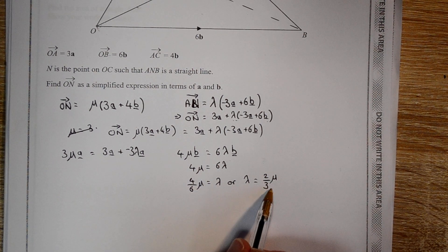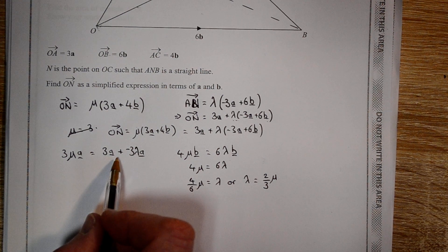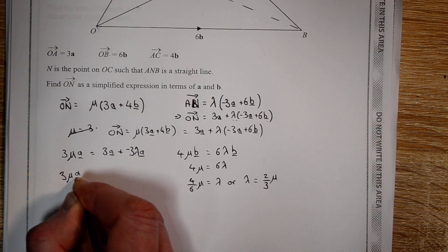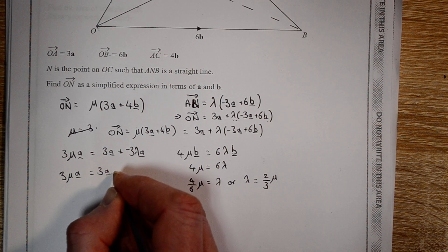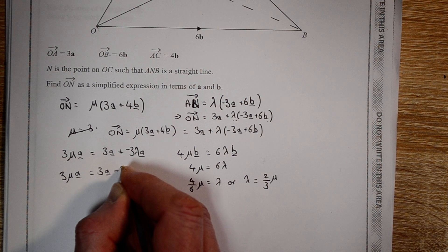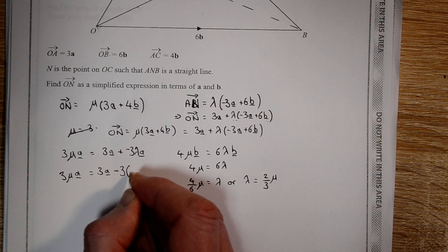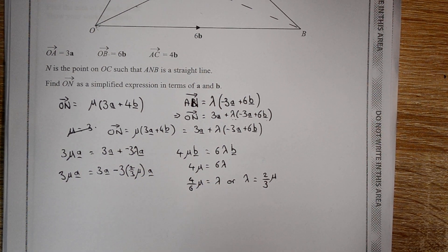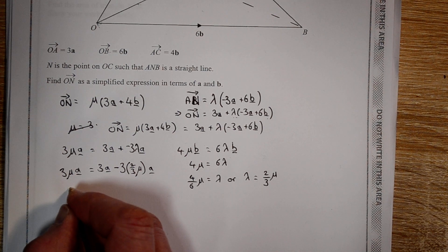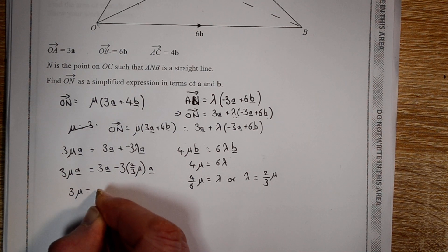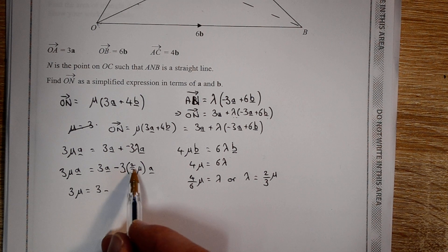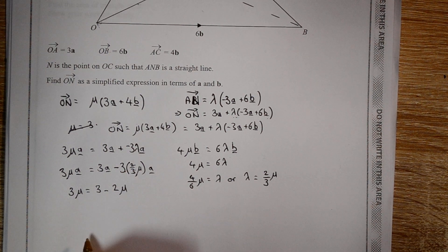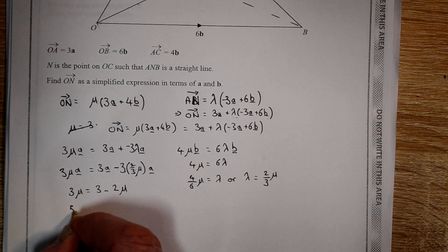Now I've established this, I can substitute this into this vector equation. So that's minus 3 lots of lambda, which is two-thirds of mu. Again, I can ignore the A's and just think about the numbers. Three lots of two-thirds is just two. So we can add the mu's, add on 2mu to each side.